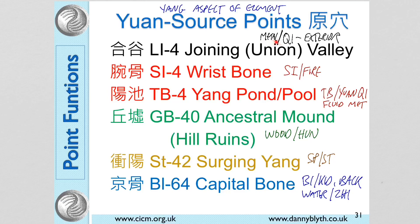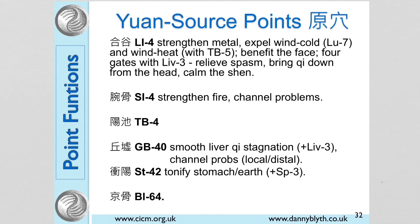Yang source points can particularly tonify the Yang aspect of the elements. Large Intestine 4 tonifies the Metal element, strengthens Qi, and has a relationship to the exterior — it is used for sweating. Small Intestine 4 can tonify the Small Intestine and the Fire element. Triple Burner 4 tonifies the Triple Burner and Yuan Qi and is especially good for fluid metabolism; it can also be an excellent point to tonify the Kidneys. Gallbladder 40 tonifies Wood and the Hun — especially the Yang aspects of Wood — for assertion and timidity. Stomach 42 is an underused point for tonifying the Spleen and Stomach because it is hard to locate and needle properly. Bladder 64 can tonify the Bladder and Kidneys, strengthen the back, and tonify Water and the Zhi — the willpower.